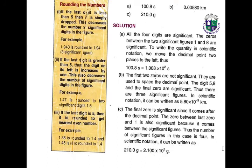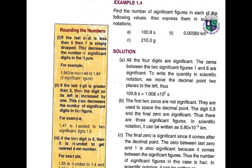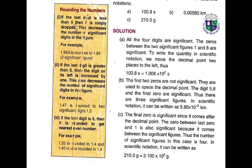In scientific notation, numbers can be written clearly to show significant figures. Rules for rounding numbers: (1) If the last digit is less than 5, it is simply dropped — e.g., 1.943 rounds to 1.94. (2) If the last digit is greater than 5, the digit to the left is increased by 1 — e.g., 1.47 rounds to 1.5 (2 significant digits). (3) If the last digit is exactly 5, round to get the nearest even number — e.g., 1.35 rounds to 1.4 and 1.45 also rounds to 1.4. Thank you, Allah Hafiz.